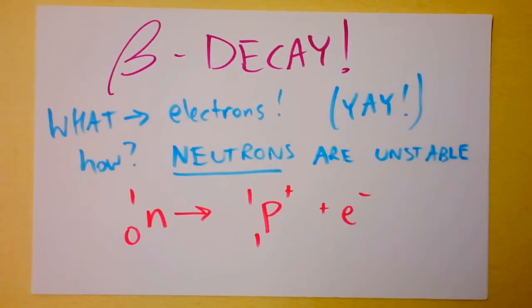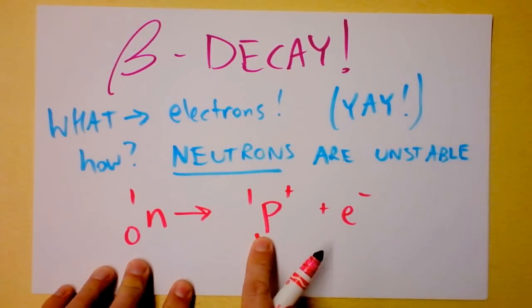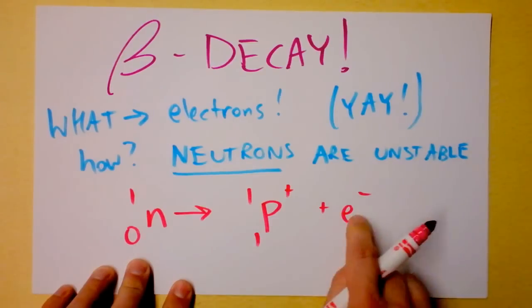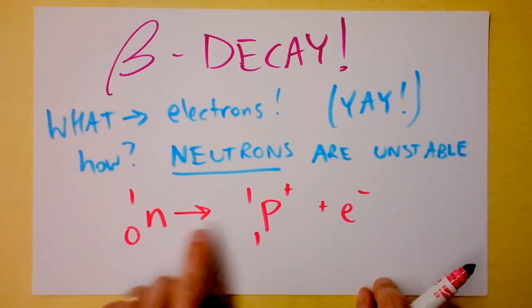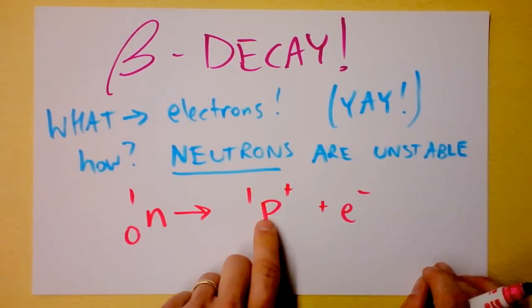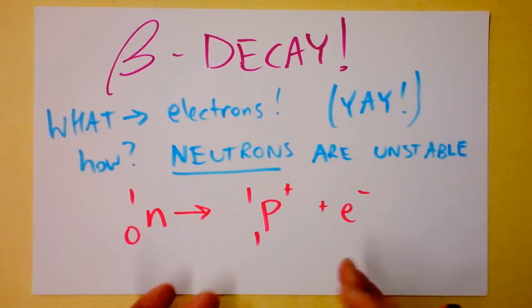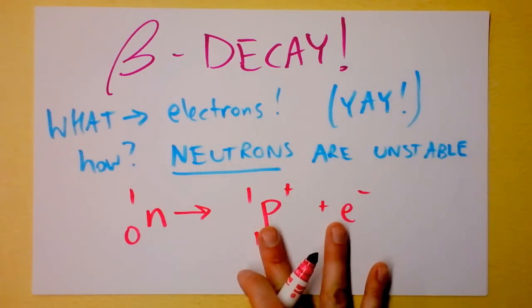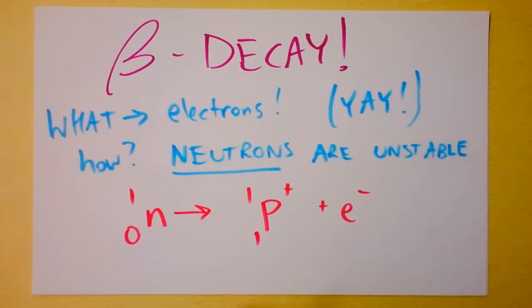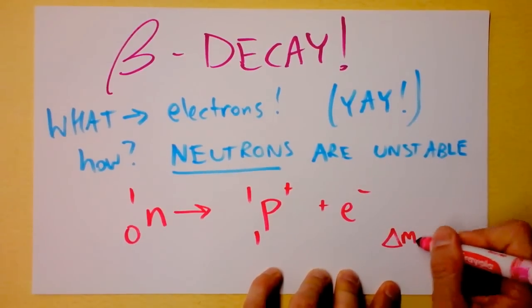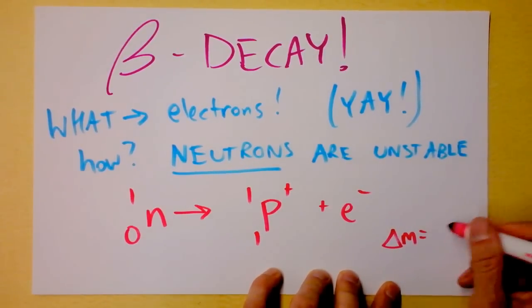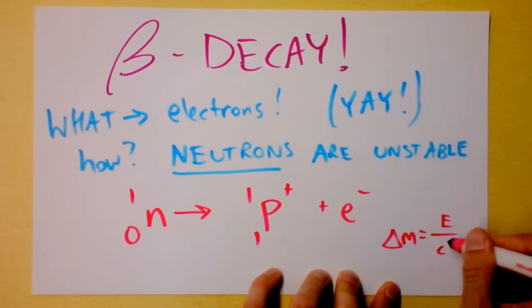You're going to actually get a proton and an electron. And guess which one stays in your nucleus? It's the big fat guy. This guy being 2,000 times more massive than that guy, stays around while this guy shoots out. The neutron in the nucleus converts to a proton in the nucleus and drops off an electron that has a ton of kinetic energy as a result because the mass of these two guys is slightly less than the mass of that guy right there. And that extra mass turns into energy. I guess delta M is going to be E over C squared.